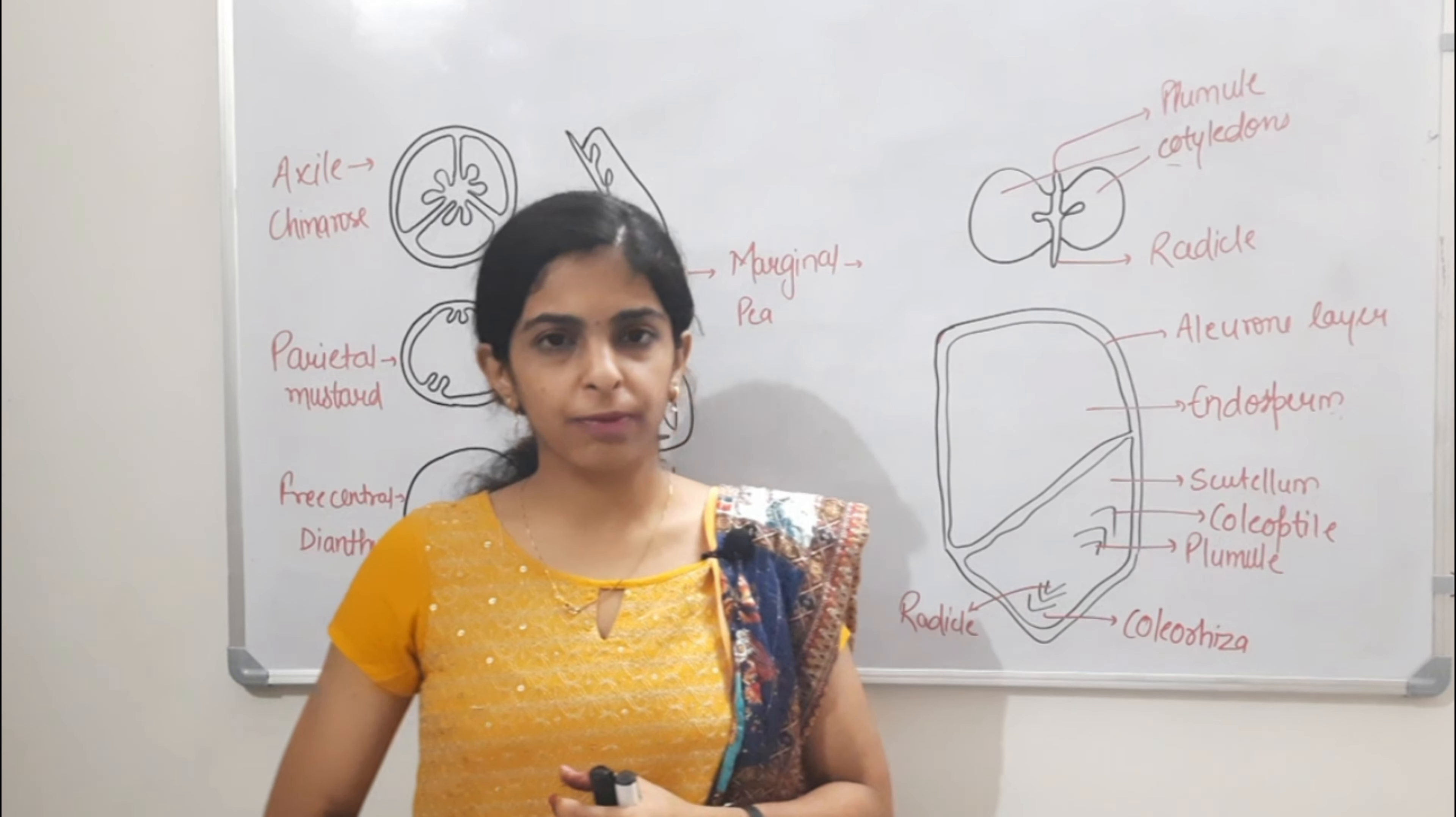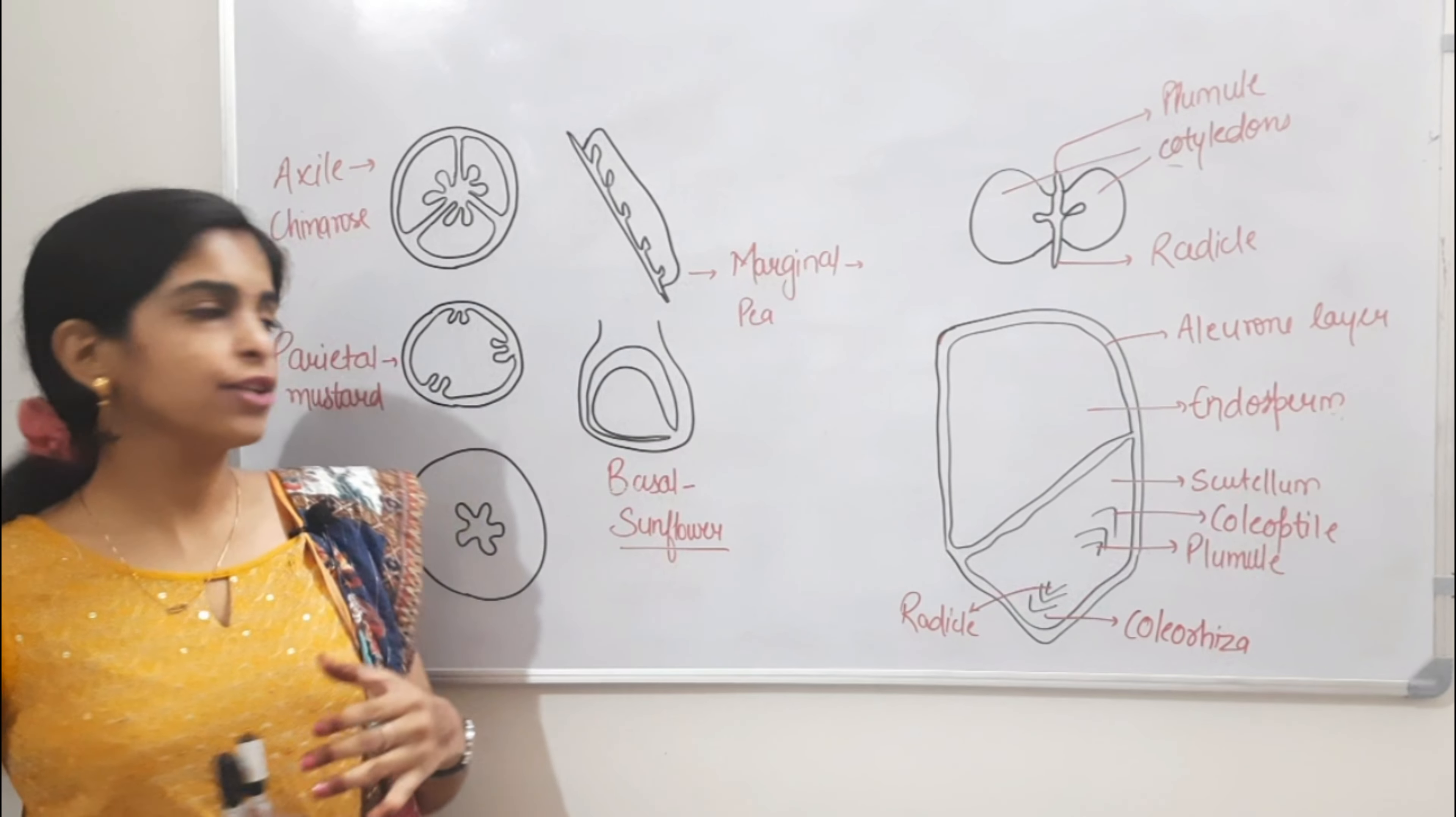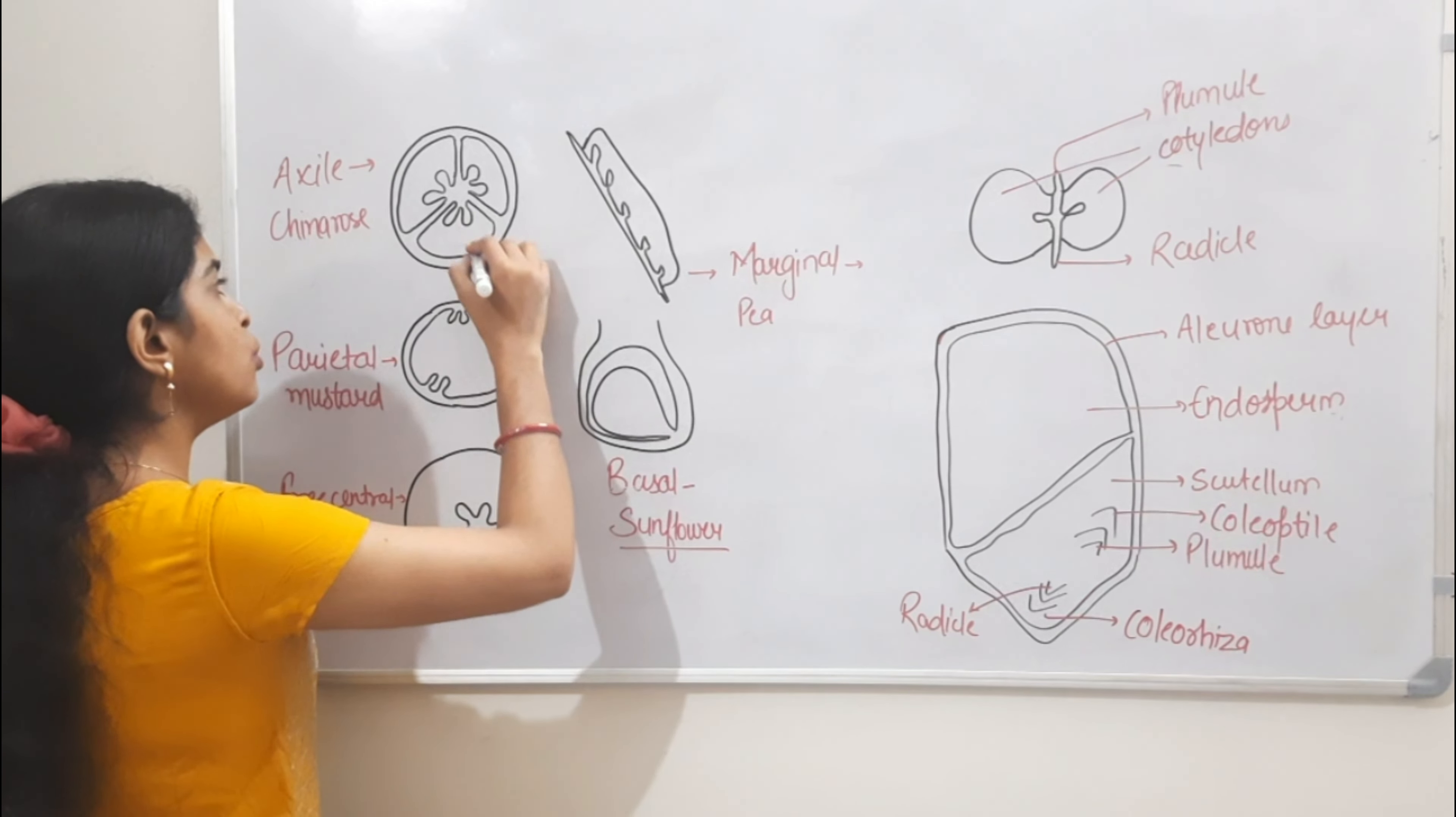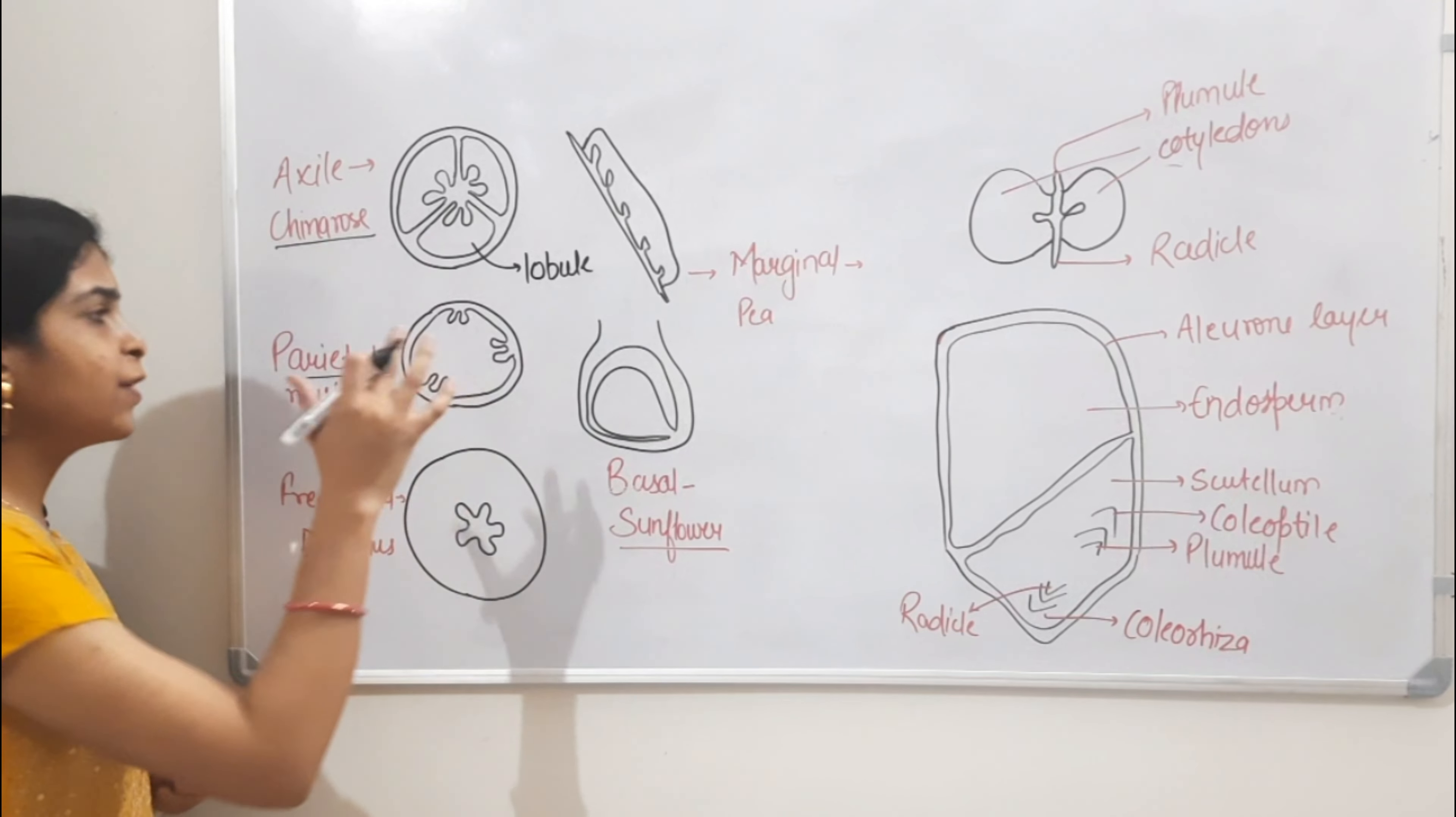So here we call the ovary's arrangement placentation. Placentation has five types. First is axile. What happens in axile? Axile ovules will be different. Ovules can be one or two, and the example is China rose.